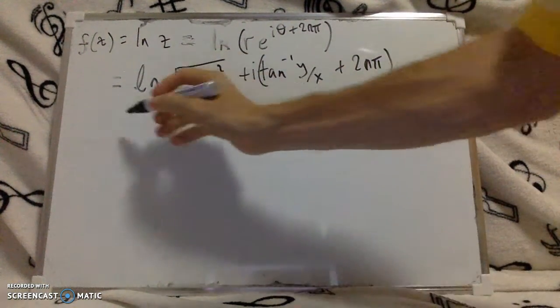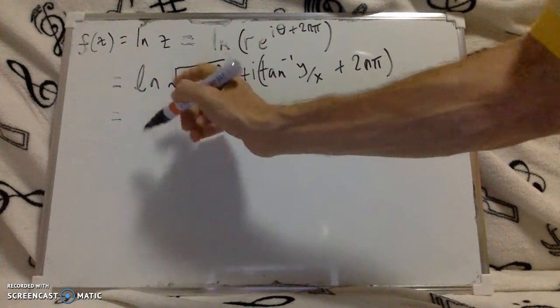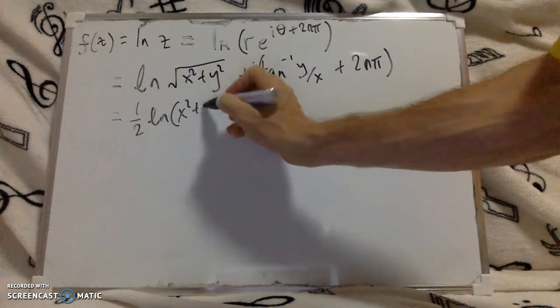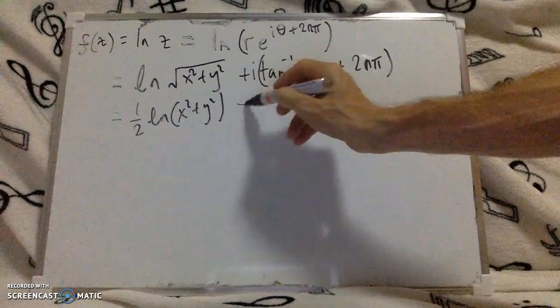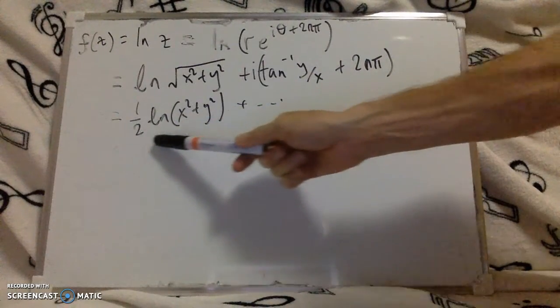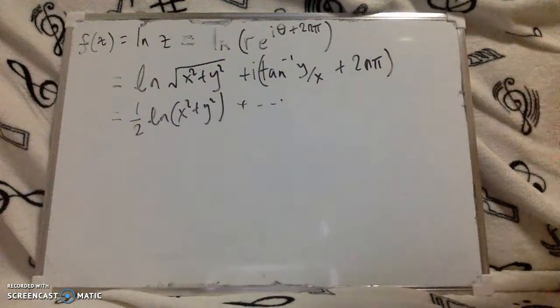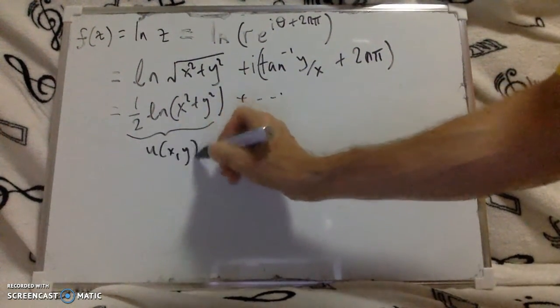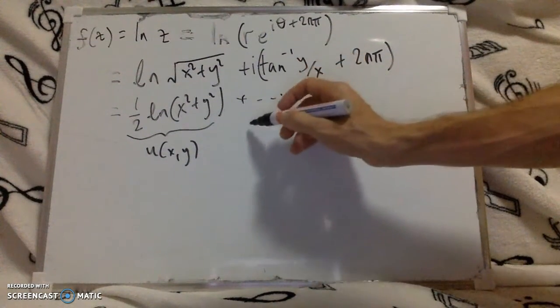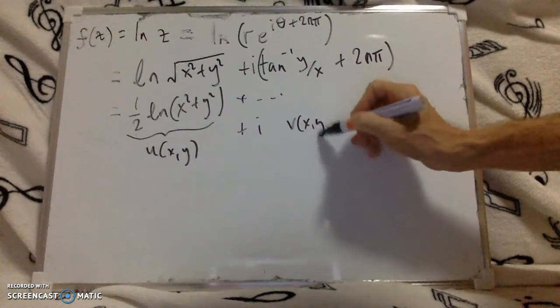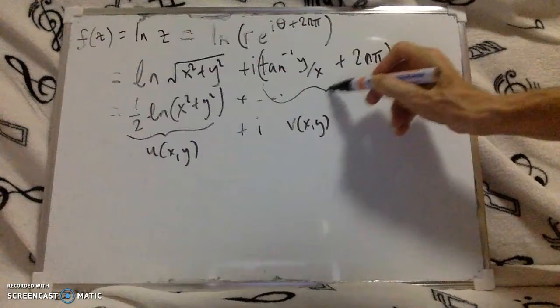I can simplify this slightly and take out a half and write it like this. So I need to write this, well this is now conveniently split into the real bit which we call u, so this bit here is u of x, y, and this is the imaginary part. So we've got plus i times v of x, y. So this thing here is what we're going to call v.